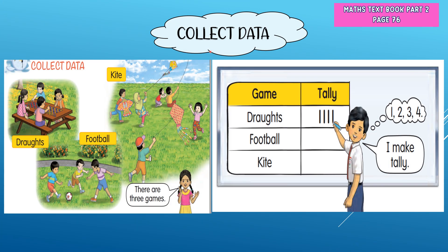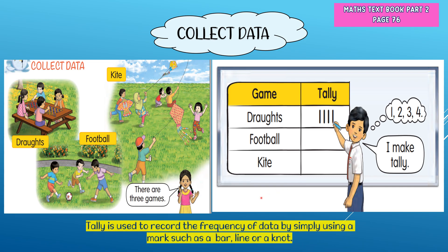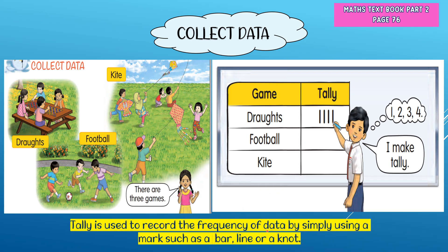Now we are going to collect, classify, and arrange data in a table. We can find out the data from the picture. Write the type of game first: draughts, football, and kite. Then make a tally. A tally is used to record the frequency of data by simply using a mark such as a bar line or a knot.